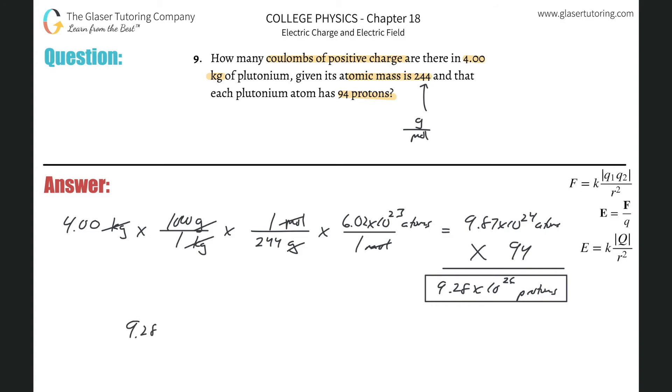So 9.28 times 10 to the 26th protons times—you have to remember this value—every one proton carries with it 1.6 times 10 to the minus 19 coulombs of charge. So the protons cancel. And now we're just going to take the number and multiply it by 1.6 times 10 to the negative 19. And what do we get? 1.48 times 10 to the 8. My eyes are going a little cross-eyed there counting the decimals, but that should be right.